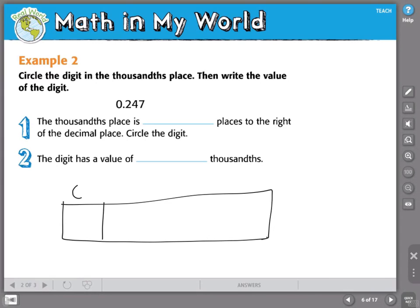This could be the ones. This could be my decimal point. This could be the tenths, the hundredths, and the thousandths. Now, I'm going to place my decimal in my place value chart. I have a 0 in the ones place, a 2 in the tenths, a 4 in the hundredths, and a 7 in the thousandths.